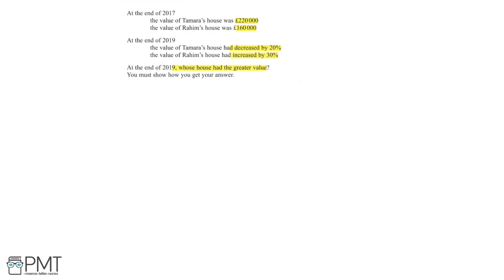We can start by deciphering what it means for the value to decrease by 20% and to increase by 30%. The original value of anything will always be equal to 100%. So if something decreases by 20%, we'd be taking 20% away from the original value. A decrease of 20% would be equivalent to 100% take away 20%, which is equal to 80%. So if something decreases by 20%, we want to find 80% of the original value.